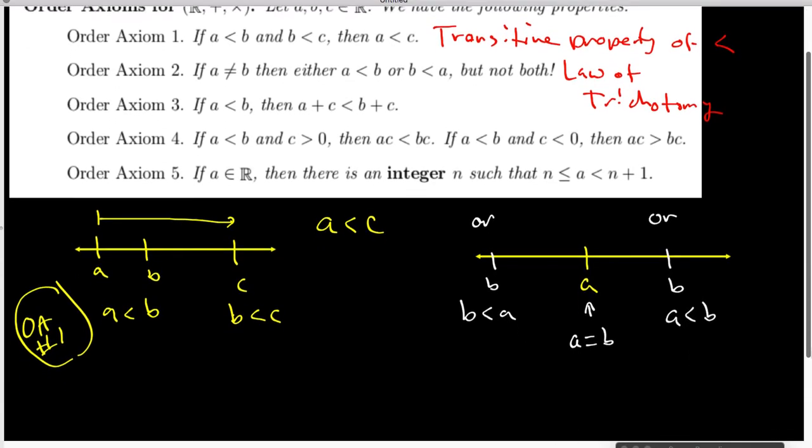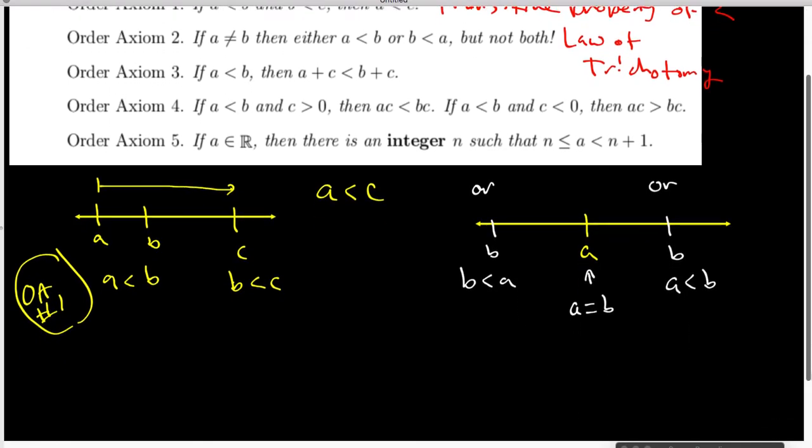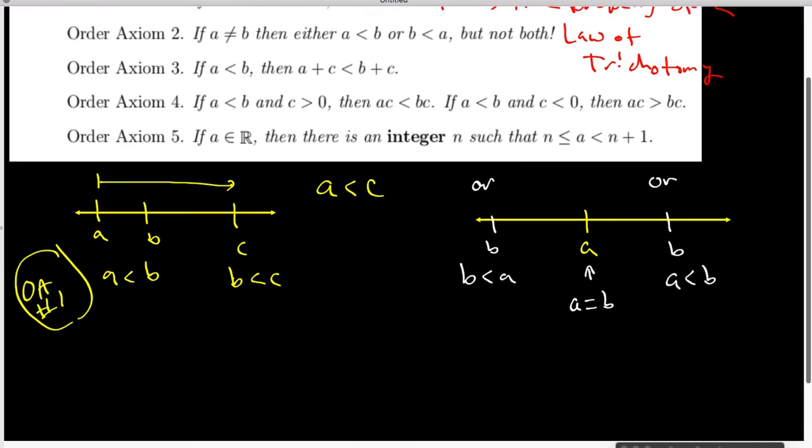Now the law of trichotomy also has one more way of being phrased and it's important to think about that as well. If I make that A equal to zero, then what we have is either B is equal to zero, B is bigger than zero so B is positive, or B is down here and B is less than zero so B is negative.